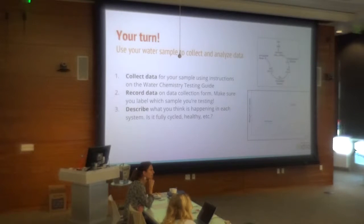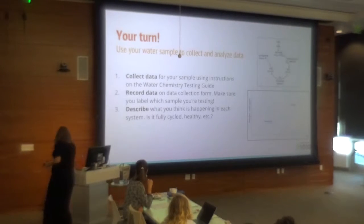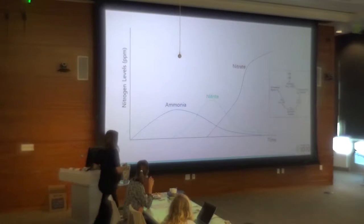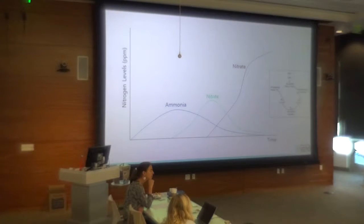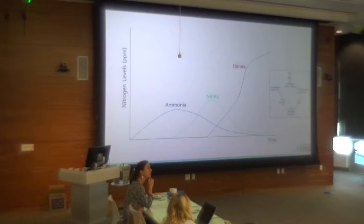I'm going to explain why you see that pattern. Typically, if you had zero, zero, zero for ammonia, nitrite, and nitrate, you would think that's at the very beginning of your system — the fish haven't even really started producing feces yet. Can anyone think of one other scenario where you might see zero for all of them? You'll have to think through this in your head.